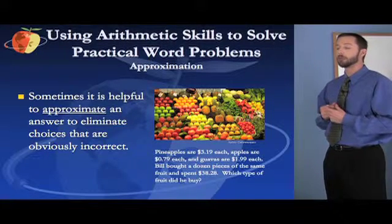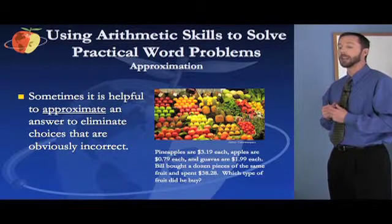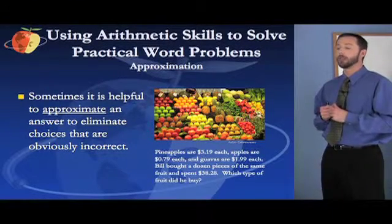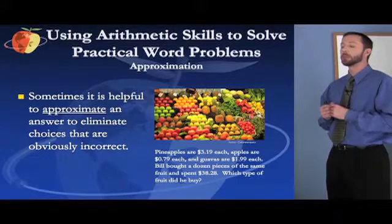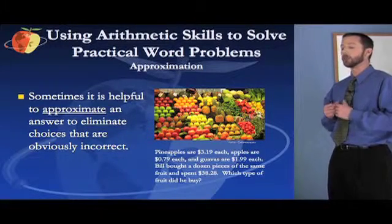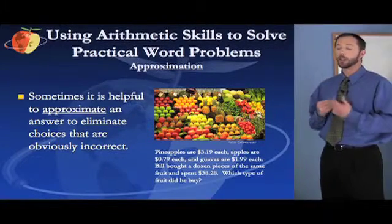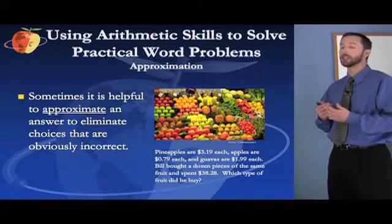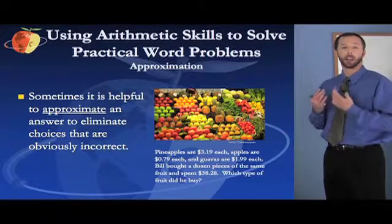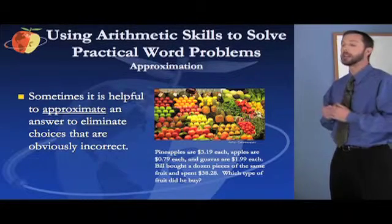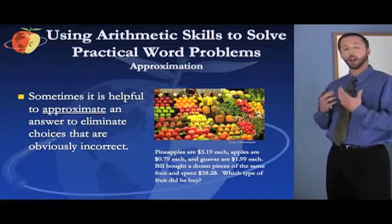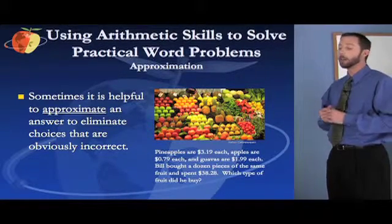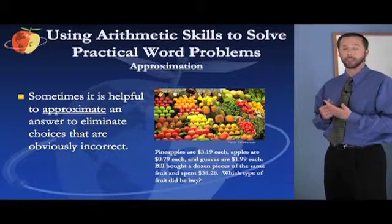Let's look at this example problem. It says pineapples are $3.19 each, apples are $0.79 each, guavas are $1.99 each. Bill bought a dozen pieces of the same fruit and he spent $38.28. Which type of fruit did he buy? You could solve this problem on the test without actually having to go through the process of multiplying each of these out in their exact form. Sometimes it's really helpful to approximate an answer to eliminate choices that are obviously incorrect.